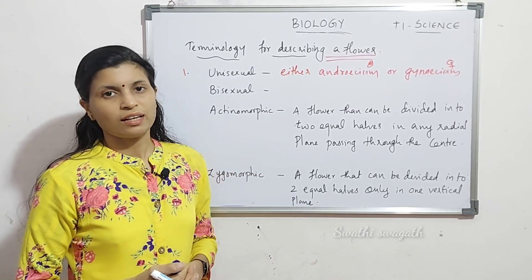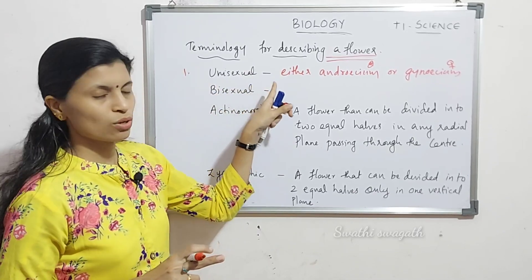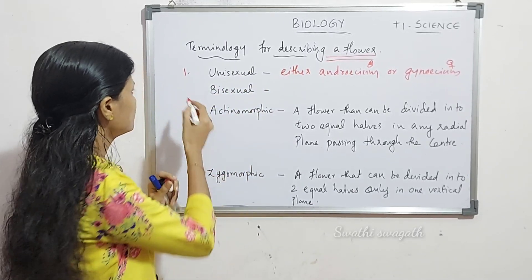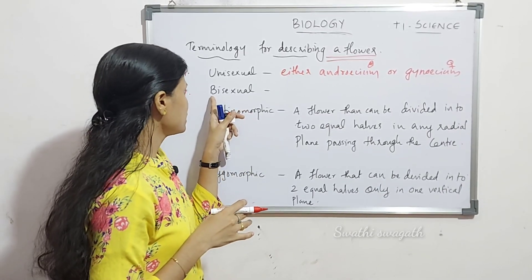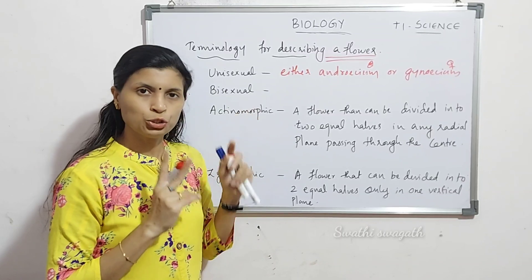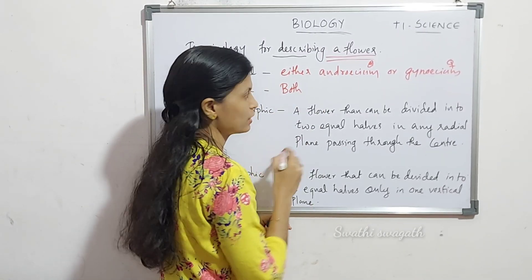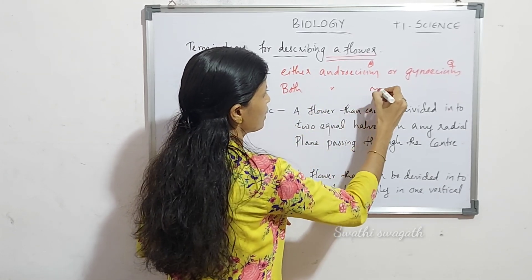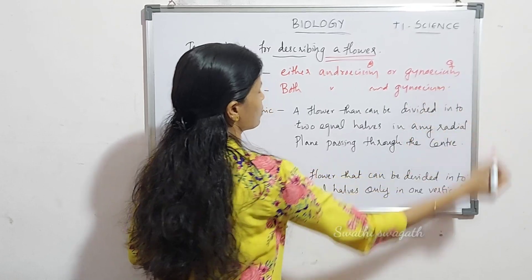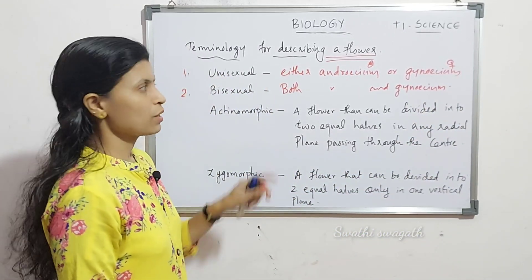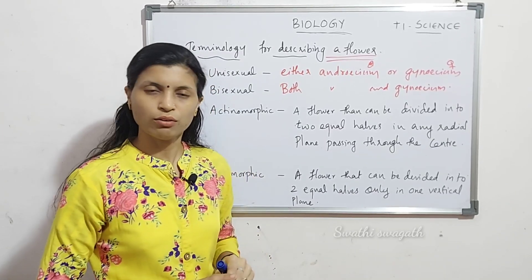The second terminology is bisexual. It is very simple — 'bi' means two. A flower with both male and female reproductive parts, that is both androecium and gynoecium. One flower that has both androecium and gynoecium is called a bisexual flower.